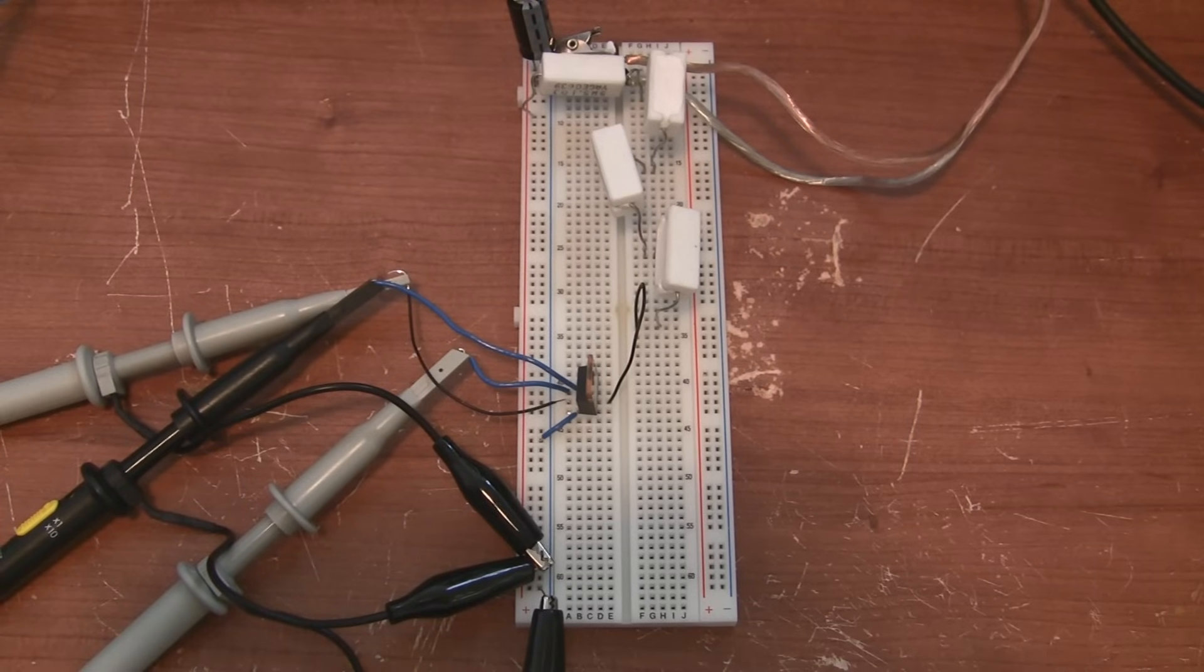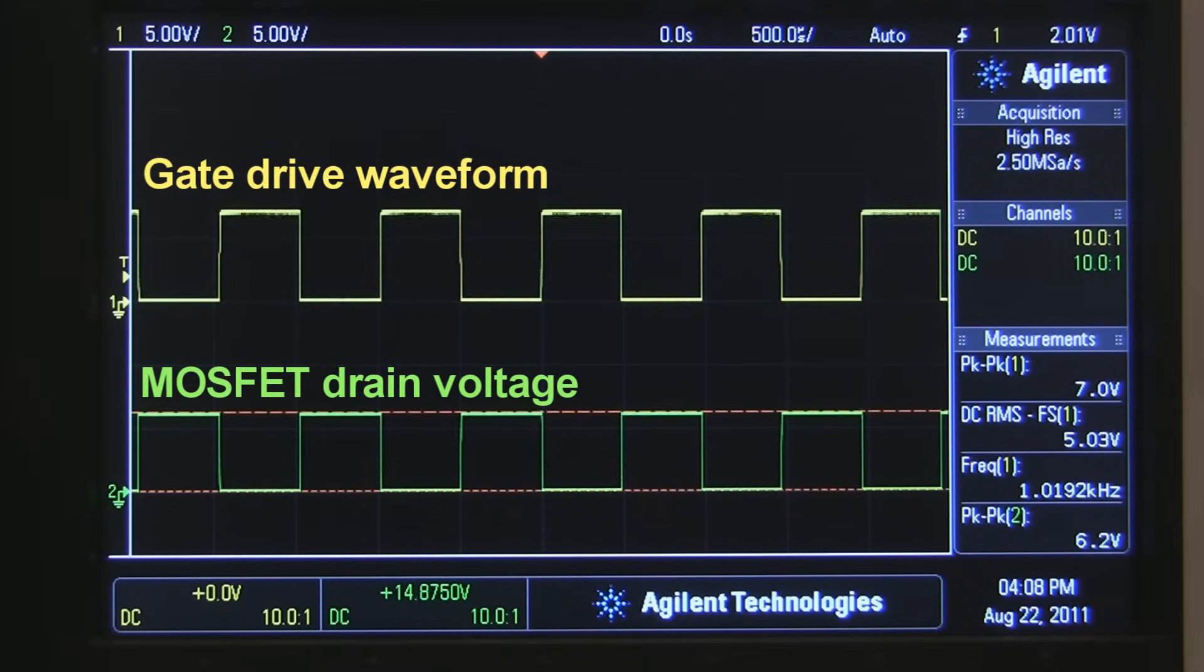Here's what that looks like on the oscilloscope. On the top I'm switching a MOSFET with a 7 volt square wave applied to the MOSFET's gate. And on the bottom you can see the voltage at the transistor's drain. It's a 6 volt square wave, very simple.